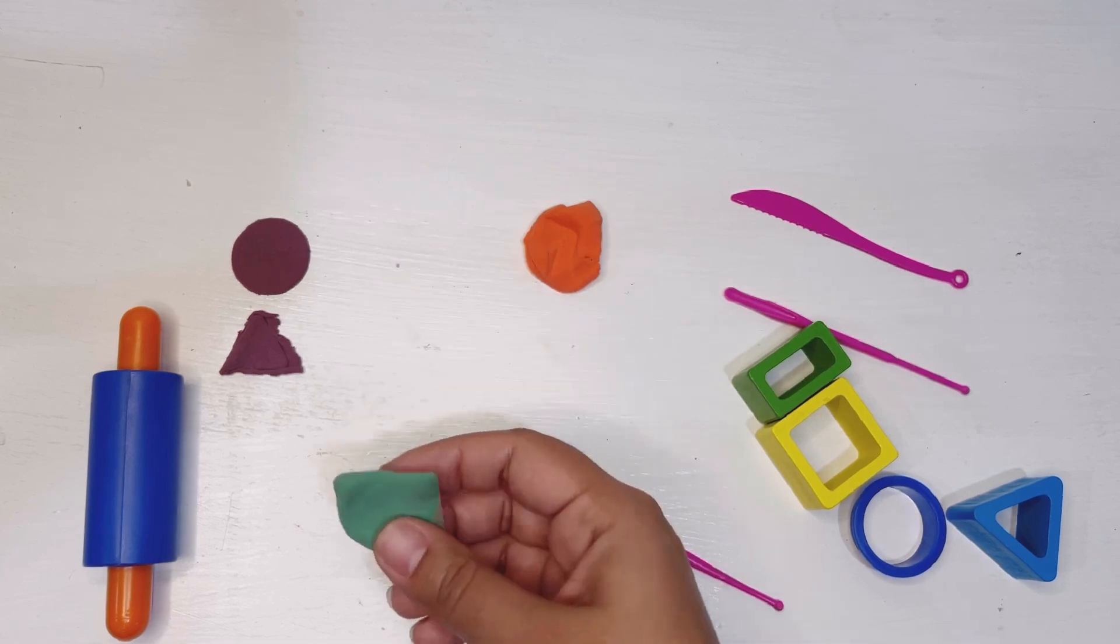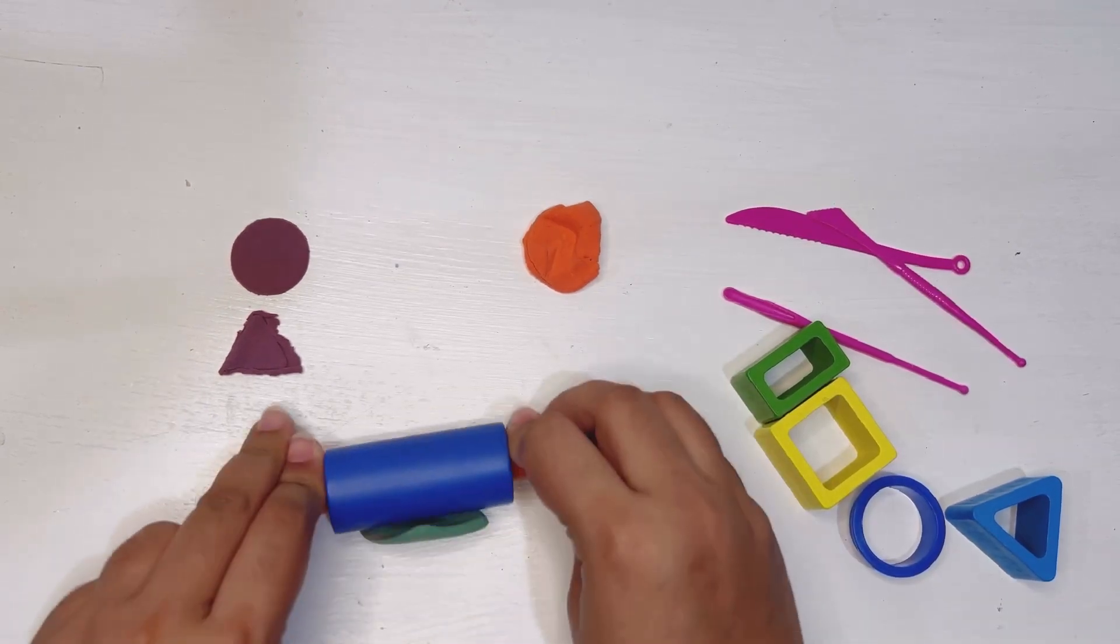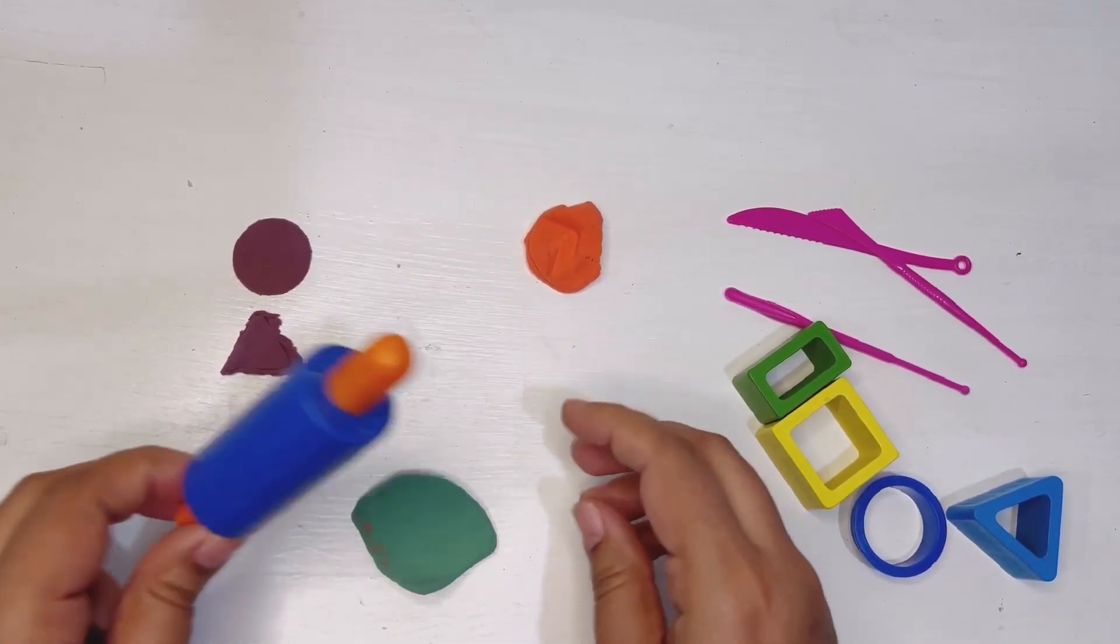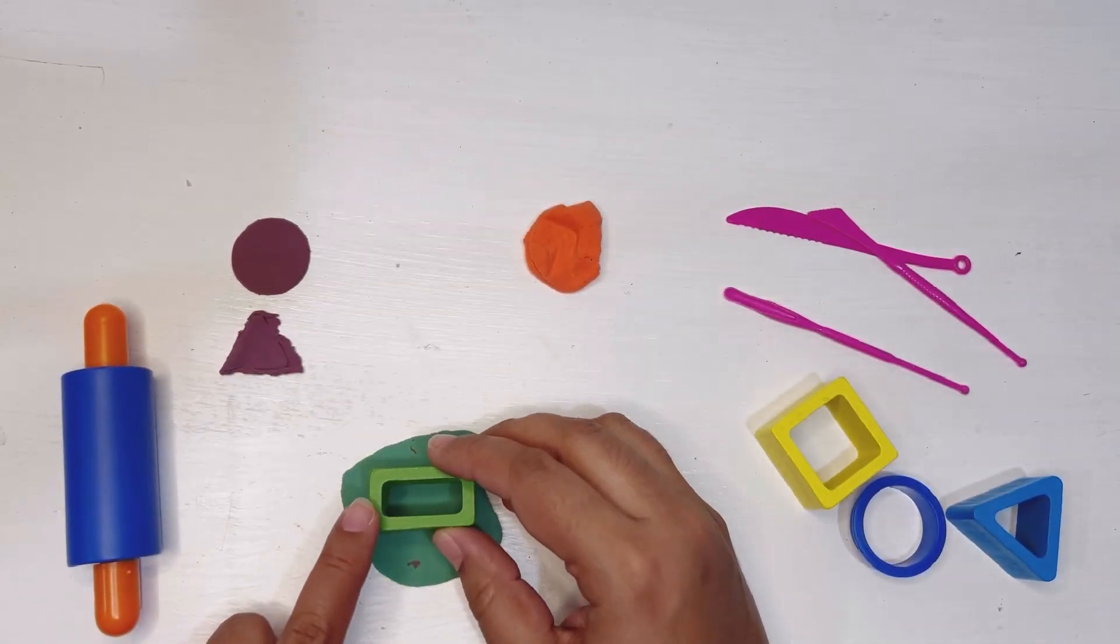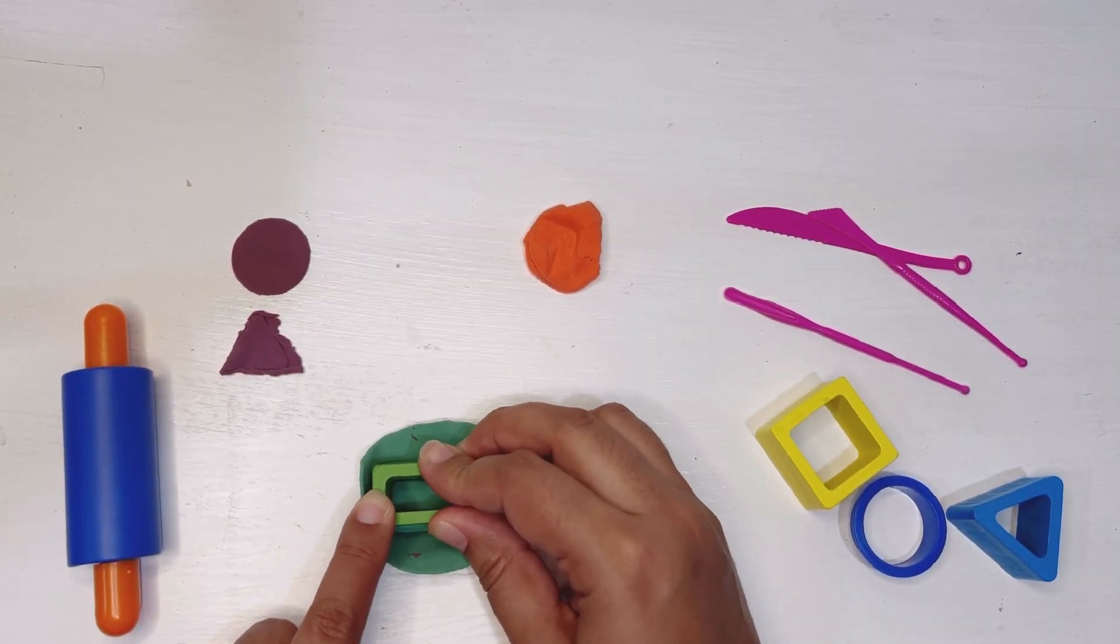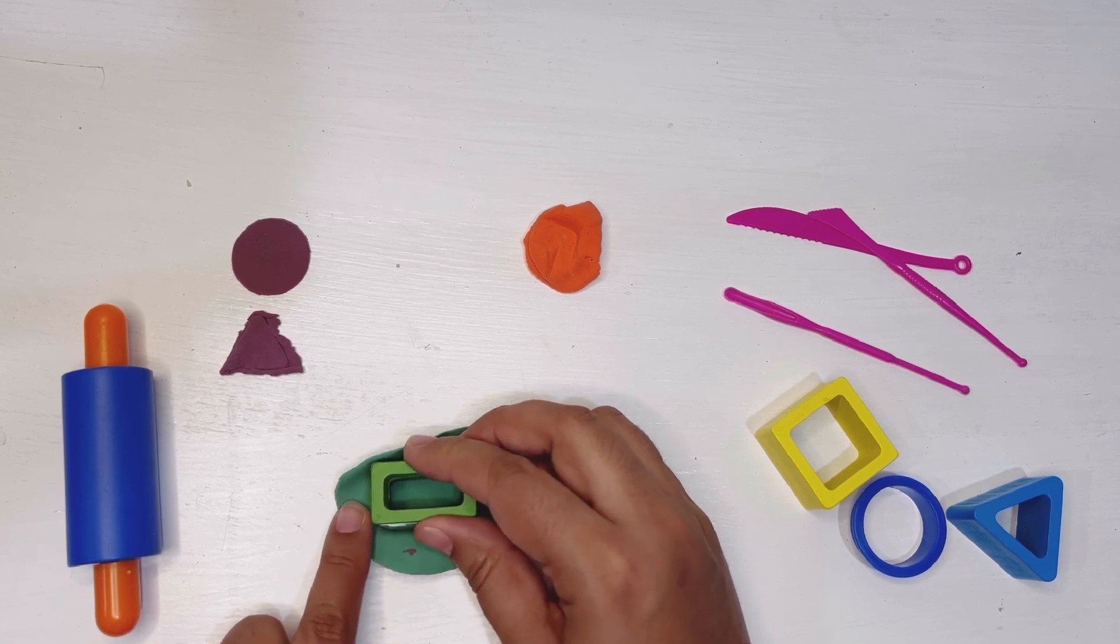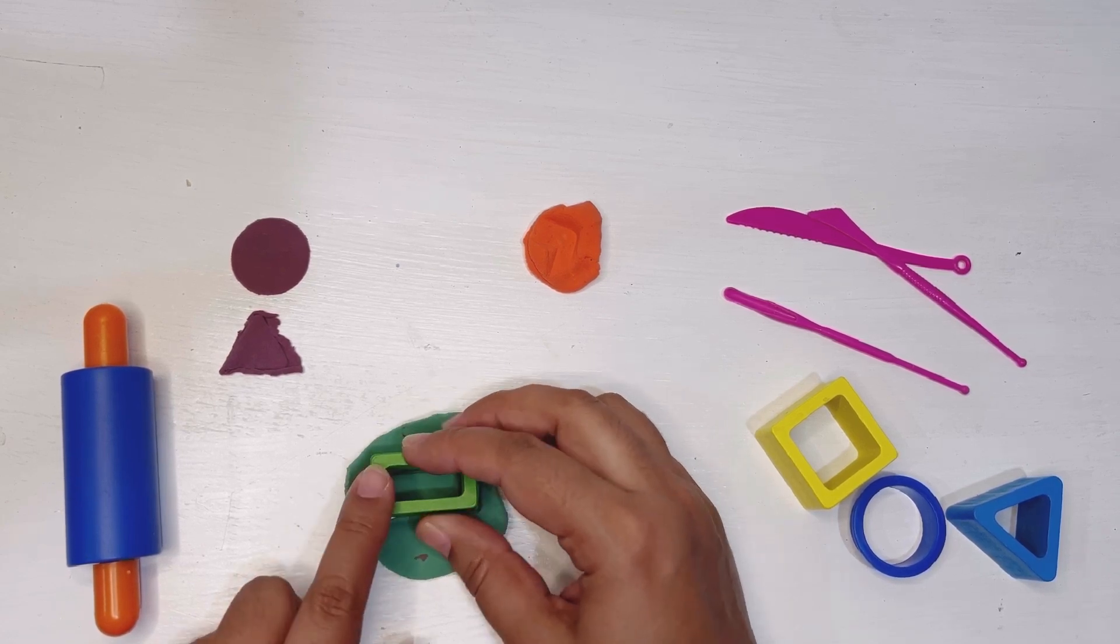Now let's do our next play-doh. This is green play-doh, let's make it flat first with the rolling pin. Here I'm done. Now I have a rectangle, let's make it with the play-doh. Here you go, almost done.